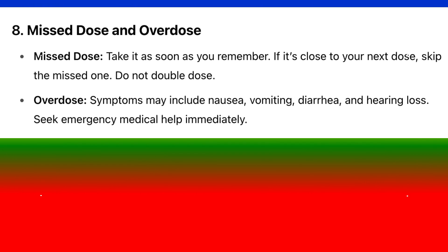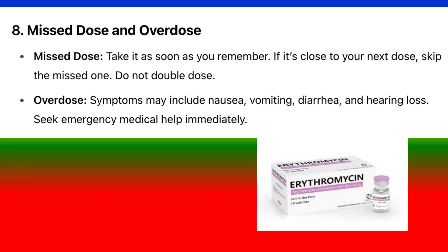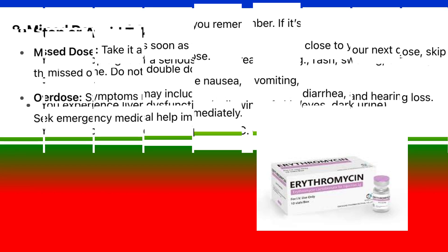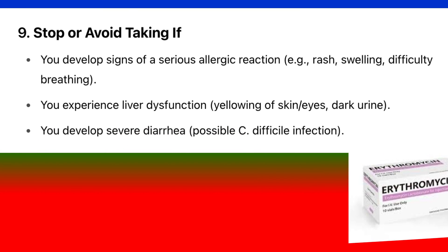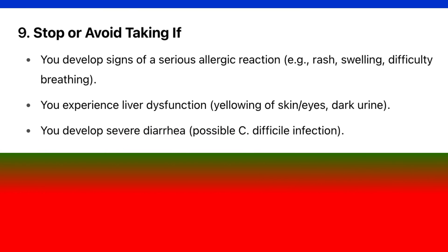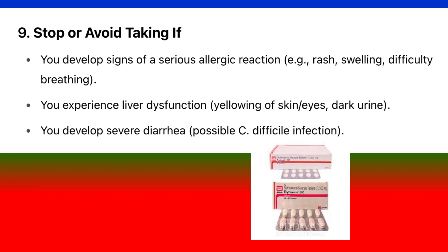Missed dose and overdose: If you miss a dose, take it as soon as you remember. If it is close to your next dose, skip the missed one — do not double dose. Overdose symptoms may include nausea, vomiting, diarrhea, and hearing loss. Seek emergency medical help immediately.